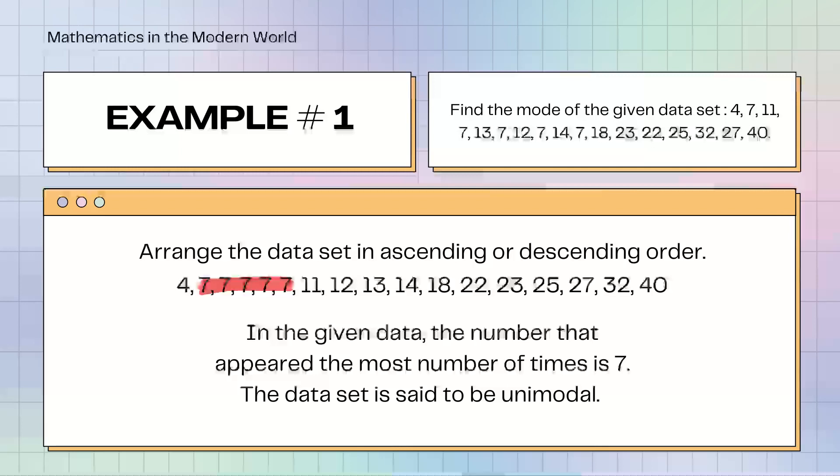As what we see in the given data, the number that appeared the most is 7. There are 5 sevens in the dataset. The dataset is said to be unimodal.